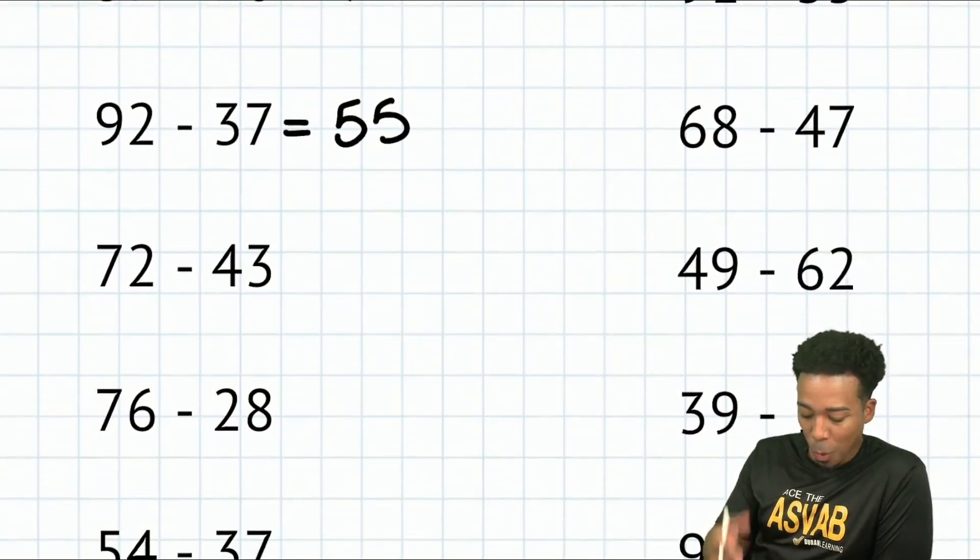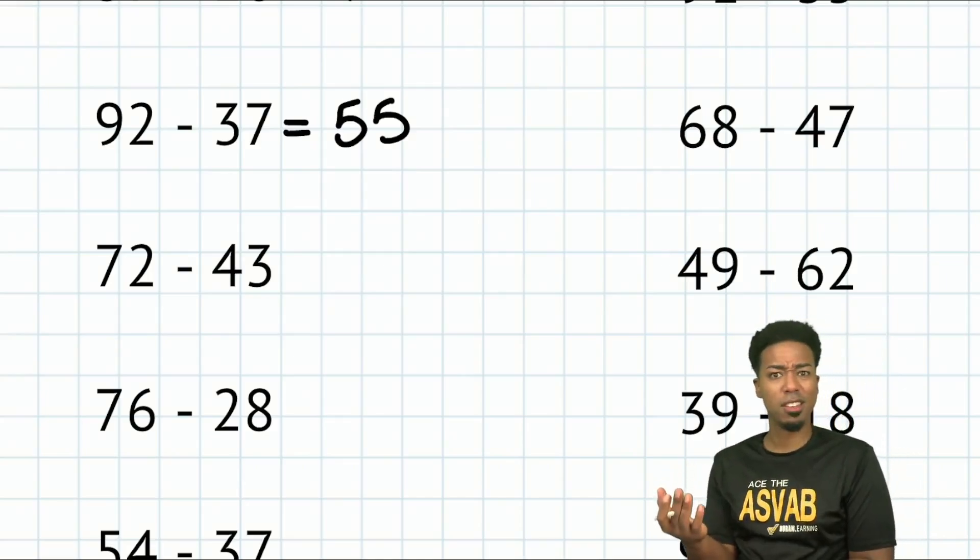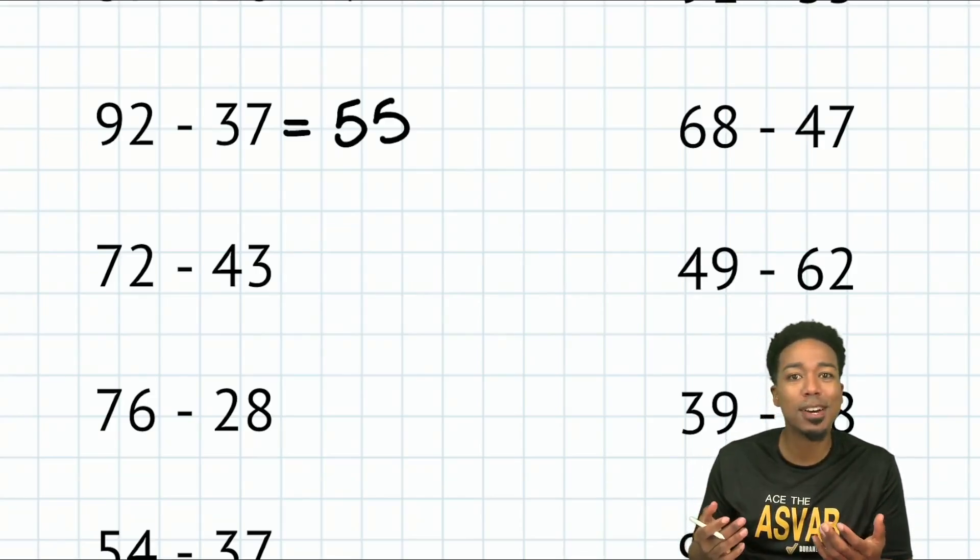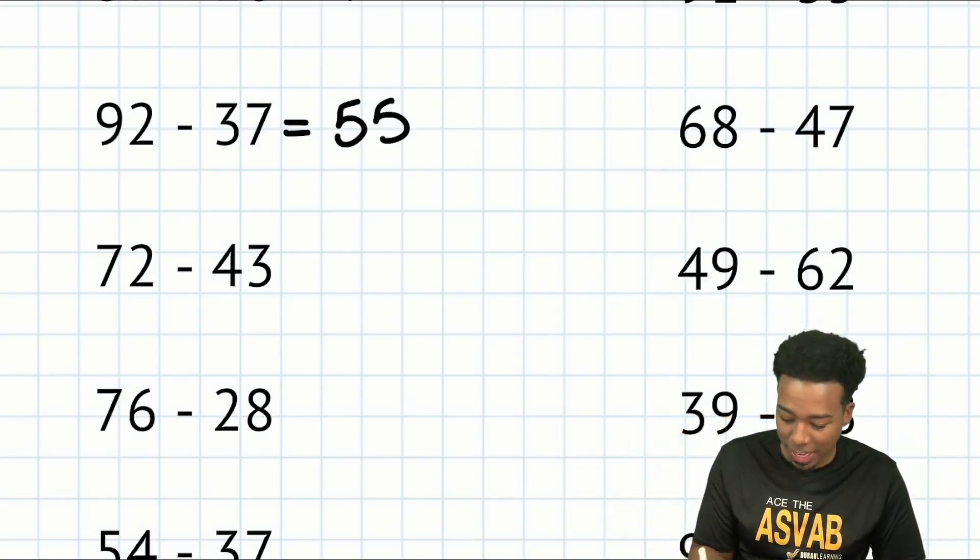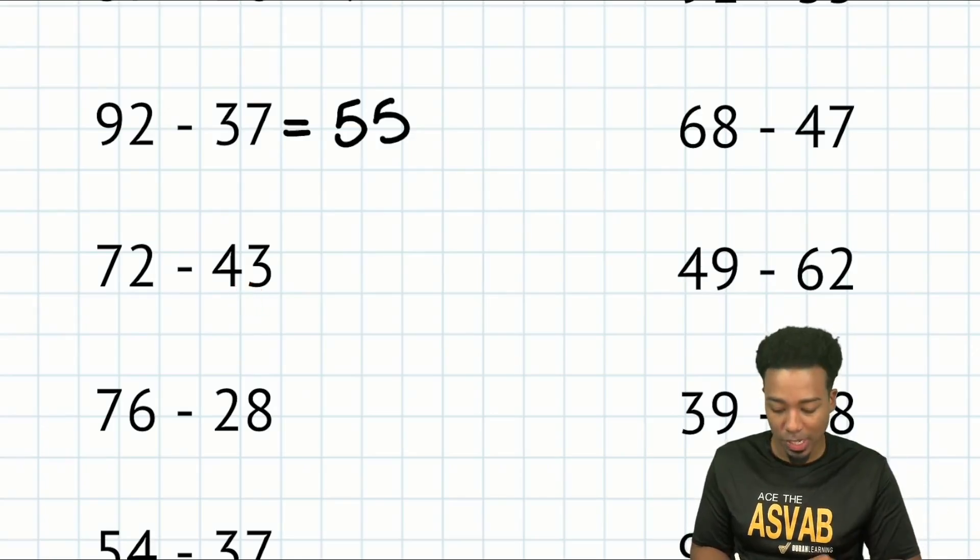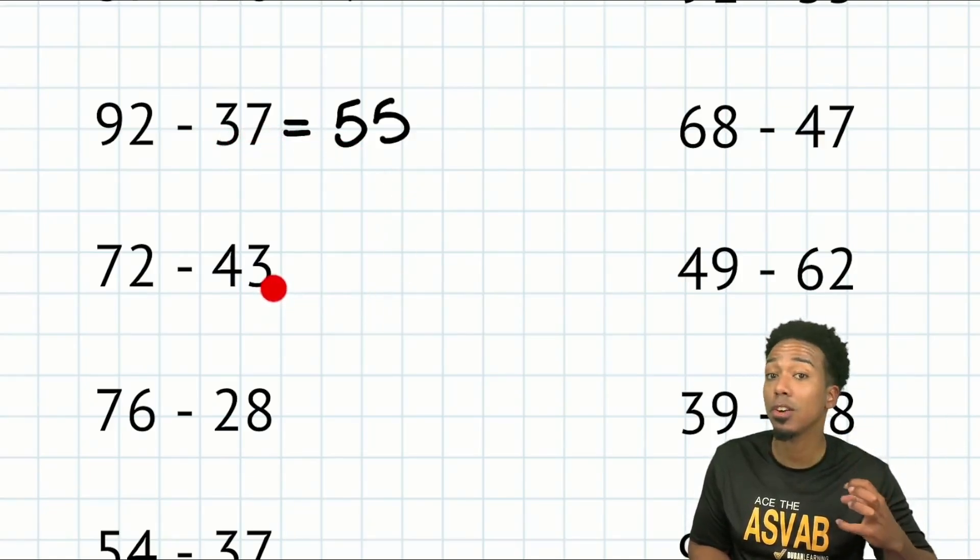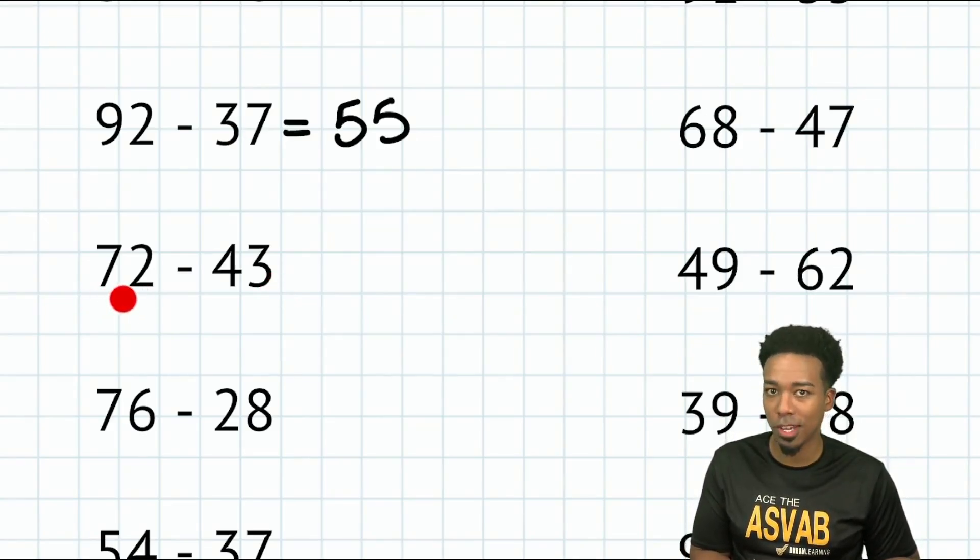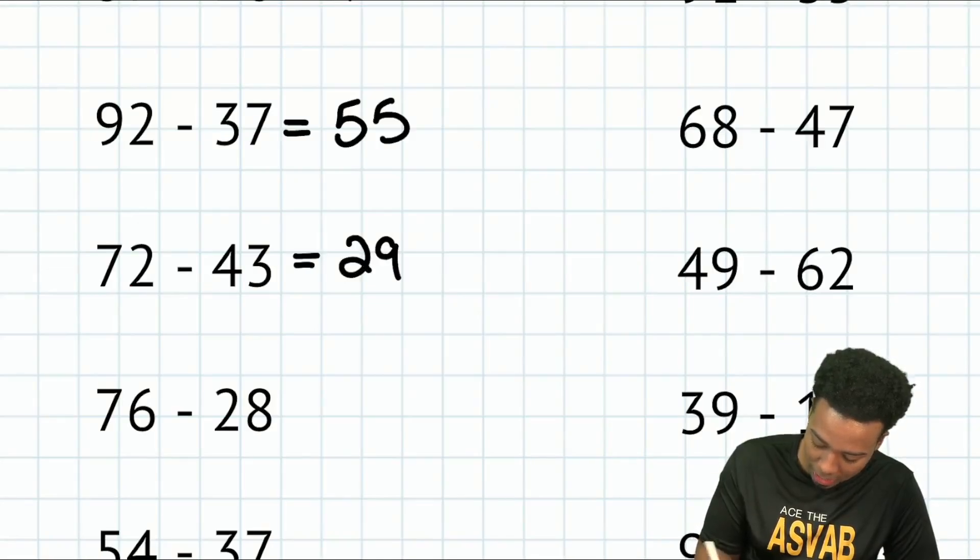Next up, we have 72 minus 43. For this one, are we going to subtract 50, then add seven back? No, not at all. Not necessary. What we can do is just subtract 40, then subtract three. Try it out. If I take away 40, then take away three, that's the same as taking away a total of 43. Notice how we have a difference here where we took away and add some back versus here we can just take away two smaller numbers. Take away 40, that's going to be 32. Take away three again, that'll be 29. Booyah, my party people, 29 and we're set.